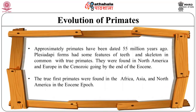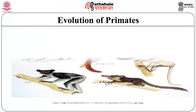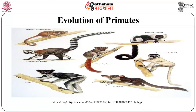The true first primates were found in Africa, Asia, and North America in the Eocene Epoch. These early primates resembled present-day prosimians such as lemurs. Anthropoid monkeys evolved from prosimians during the Oligocene Epoch. By 40 million years ago, evidence indicates that monkeys were present in the New World, that is South America, and the Old World, that is Africa and Asia. New World monkeys are also called platyrrhines, referring to their broad noses. This picture shows the howler monkey, which is native to South America.